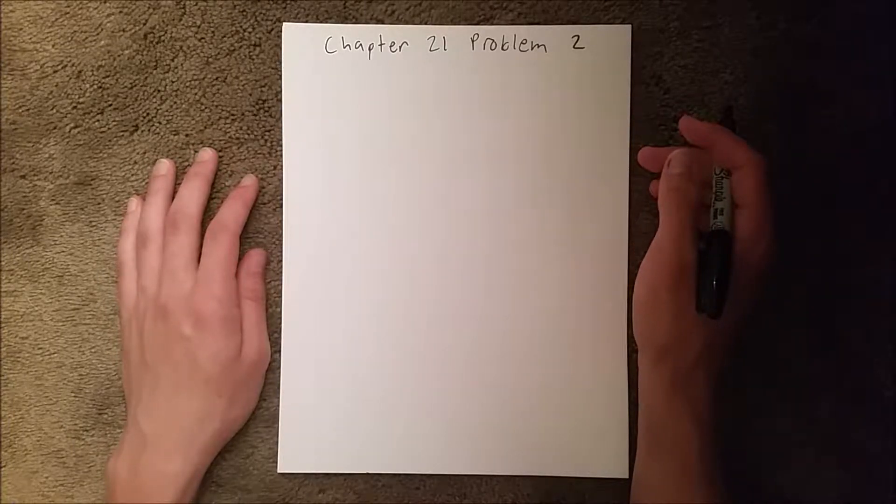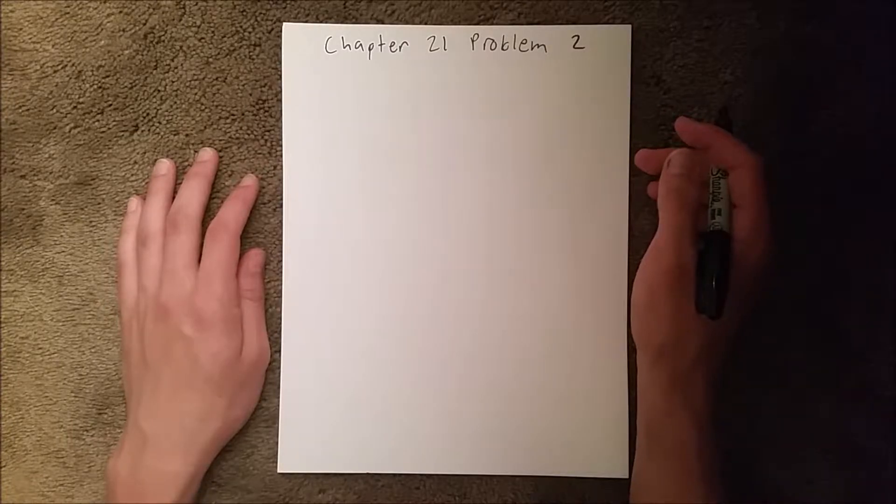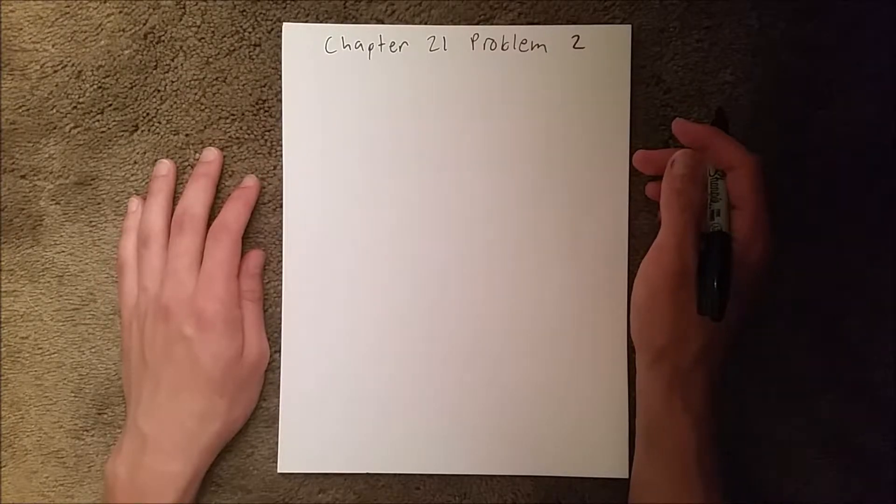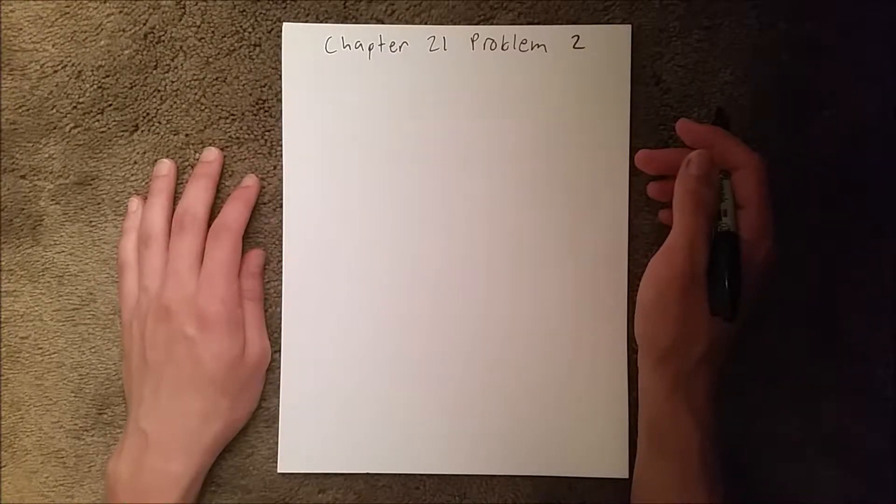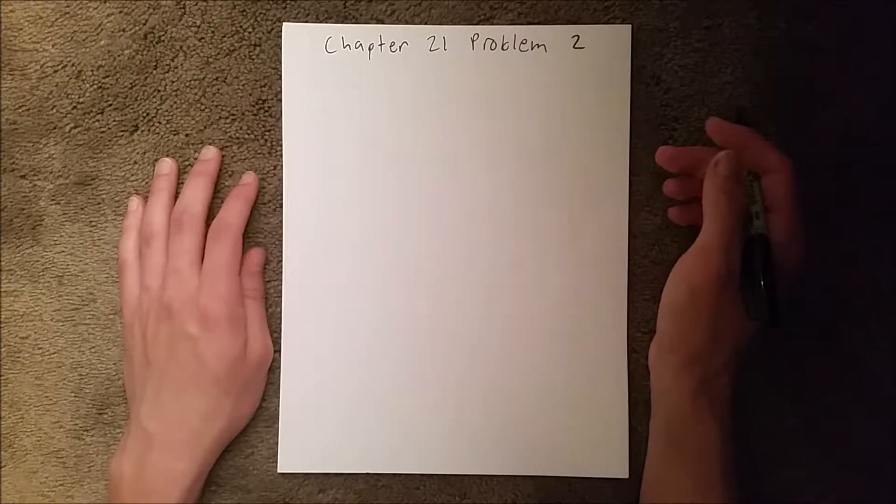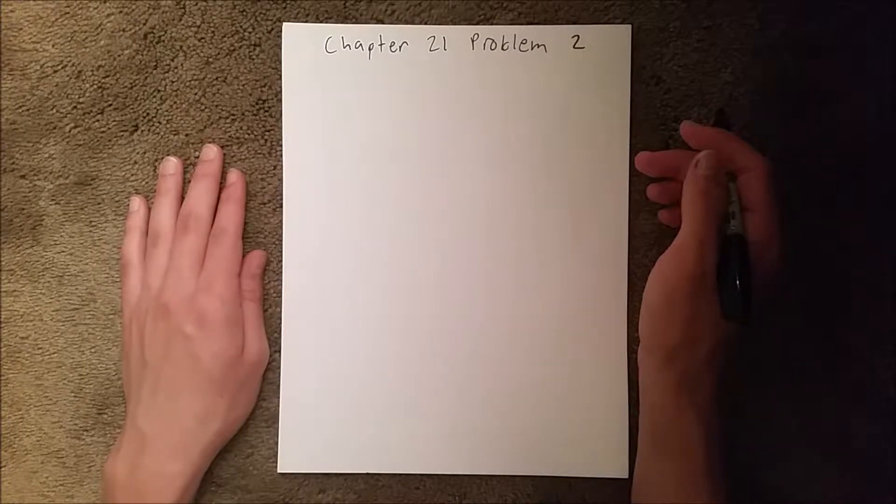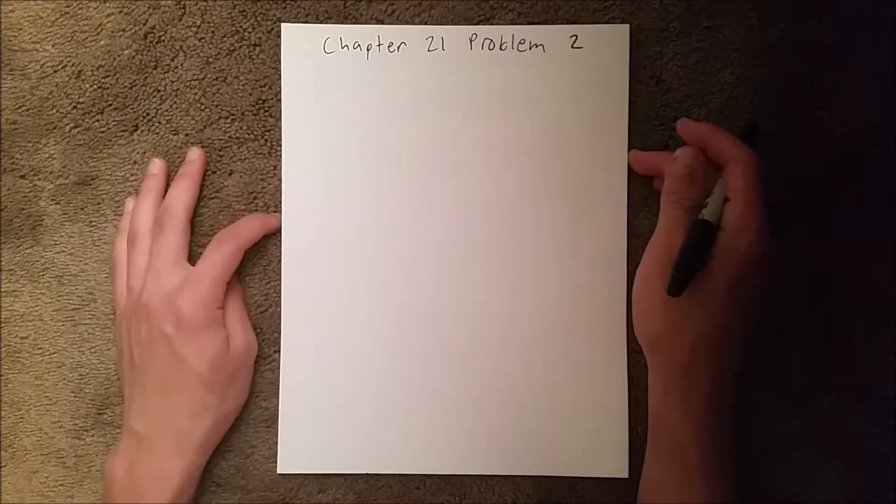We're given two particles and we're told how far away they are from each other. We're given both their accelerations and we're given one of their masses. The other one is unknown and we're asked to find that in part A, and then in part B we need to find the charge on each particle.